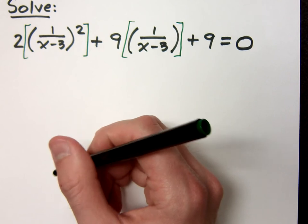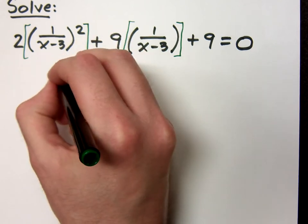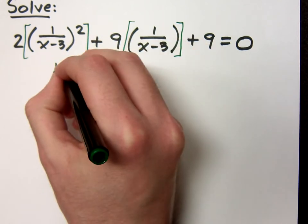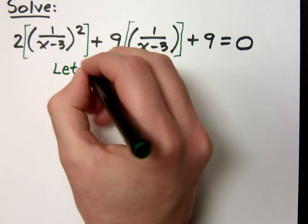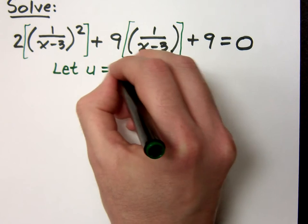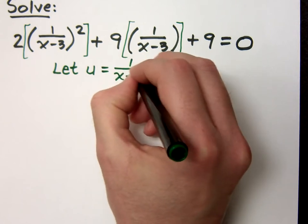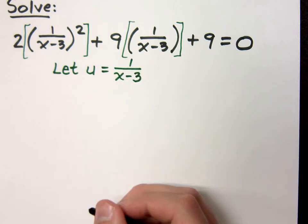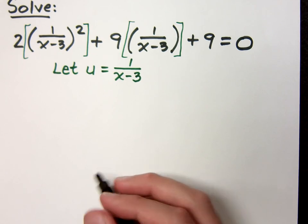So what I can do is what's called a u-substitution. And instead of writing things that are complicated like this, I make this declaration. I let u represent this complicated guy, 1 over x minus 3. And when I do that, I'm going to be able to rewrite my equation in a way that's a little bit easier for me to work with.